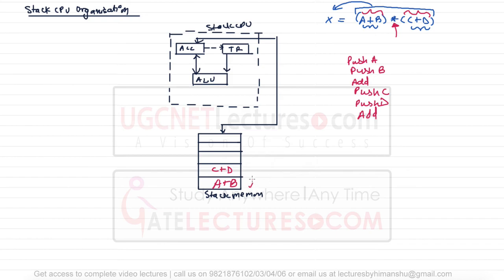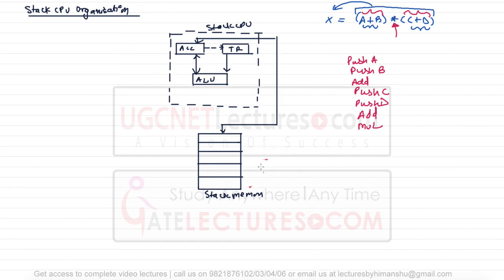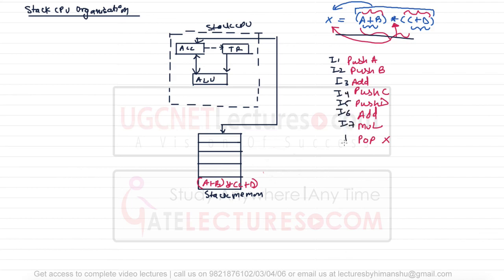Now with a + b and c + d both in the stack, instruction I7 is MULTIPLY: c + d will be popped out, a + b will be popped out, multiplication is performed, and the result (a + b) × (c + d) is stored back into the stack. Finally, instruction I8 pops the result to variable x — x is the destination. So to perform this operation, a total of eight instructions are required.